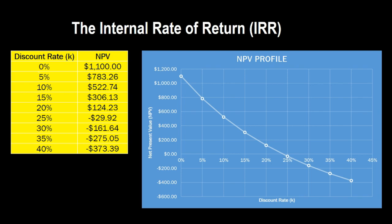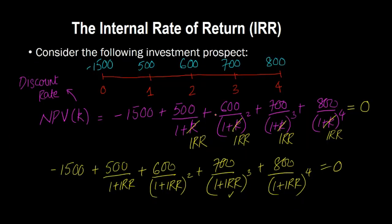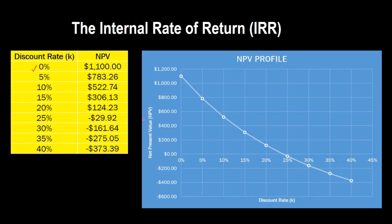For example, suppose you plug in a discount rate of zero. That means you're not discounting any of your future cash flows at all. So 500 plus 600 is 1,100, plus 700 is 1,800, plus 800 is 2,600. The value of your inflows is 2,600. Net out the initial investment of 1,500, and the NPV would be 1,100 — positive.